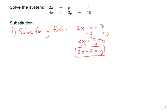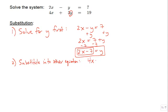We've solved for y and now we're going to do the actual substitution. We are going to substitute this expression for y into the other equation. We take our second equation, 4x plus 3y equals 19, and wherever we see y we replace it with 2x minus 7 in parentheses. After you've done that, you should have a linear equation with only one variable, namely x, so all we have to do now is solve for x.